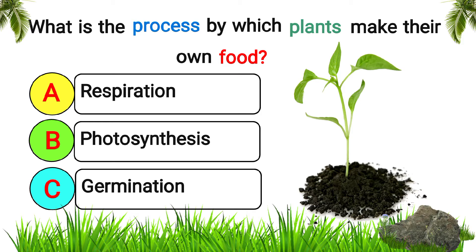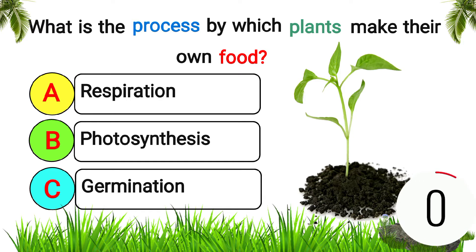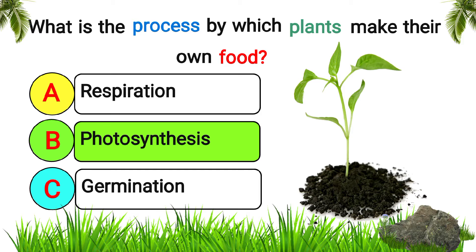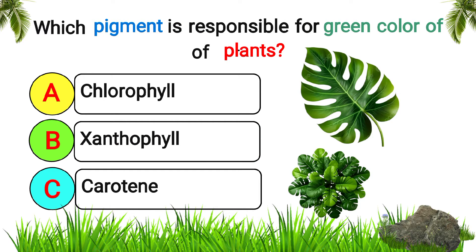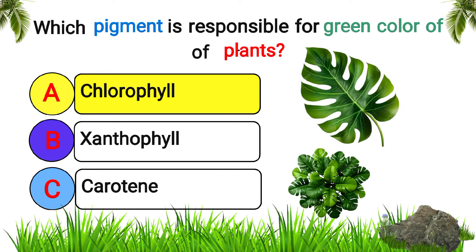What is the process by which plants make their own food? Answer: photosynthesis. Which pigment is responsible for the green color of plants? Answer: chlorophyll.